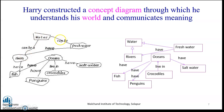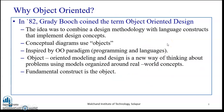Harry constructed a concept diagram through which he understands his world and communicates meaning. In this diagram, water can be rivers or fresh water; rivers have fish; oceans have penguins; crocodiles live in oceans; and oceans have salt water. From those concepts, keywords, and objects, he constructed a meaningful diagram.